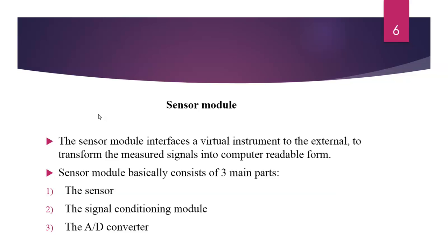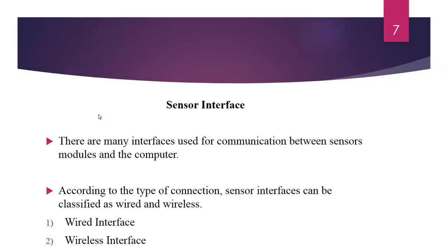Coming to the sensor interface: there are many interfaces used for communication between the sensor module and the computer. According to the type of connection, the sensor interface can be classified as wired and wireless. Wired interfaces include the parallel bus interface such as PCI, or serial bus interfaces such as RS-232, USB, and GPIB. Wireless interfaces include the 802.11 family of standards, Wi-Fi, and Bluetooth.